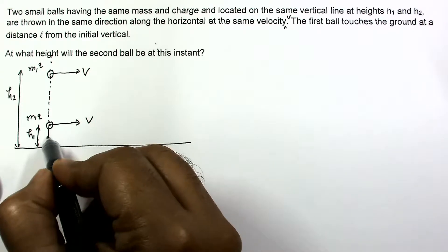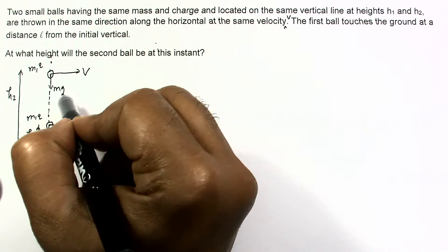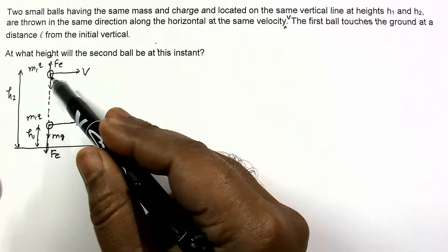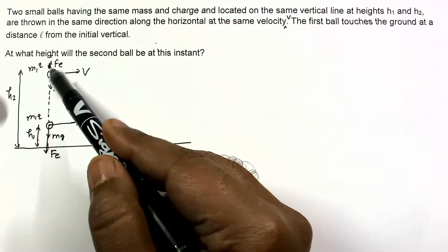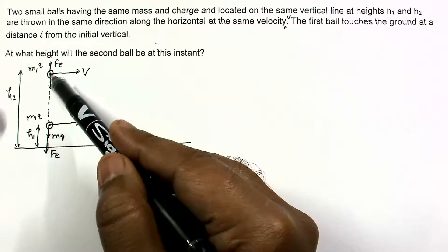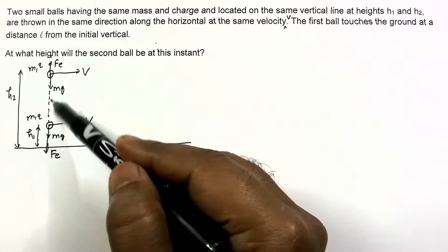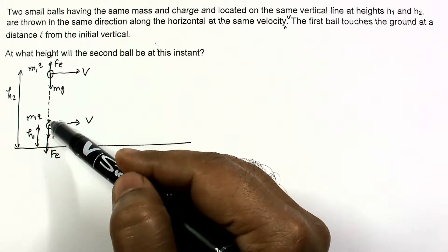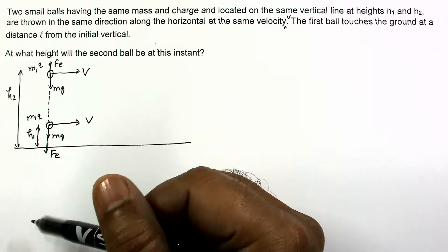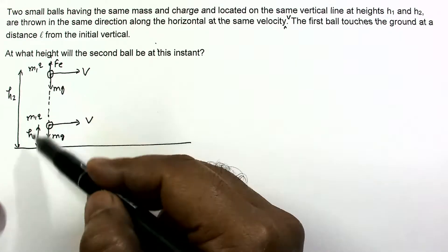Analyzing the forces on each ball: mg plus electrostatic force acts on both, so the acceleration of both will be different. The forces are in the vertical direction, but the electrostatic force depends on the gap between the two particles, so this force may change during motion. The force on each ball will be a variable force — this is not simple projectile motion under gravity, and if the force is variable we would have to use integration.